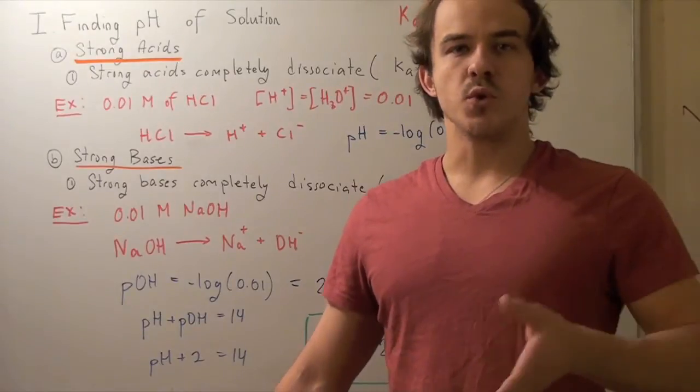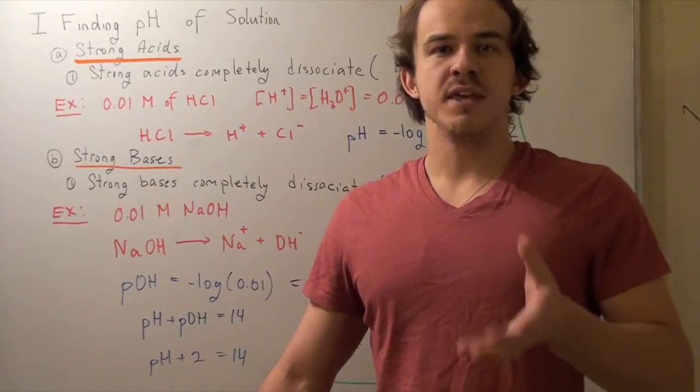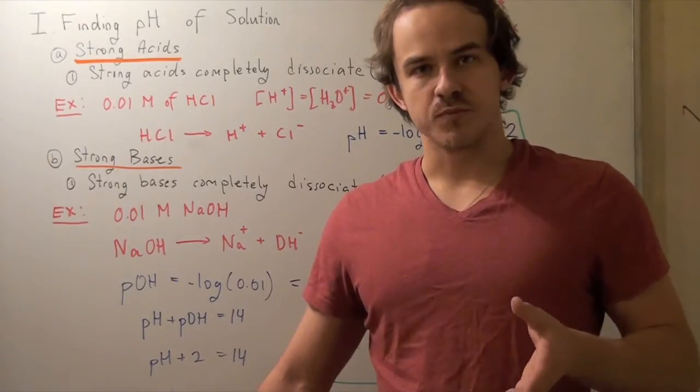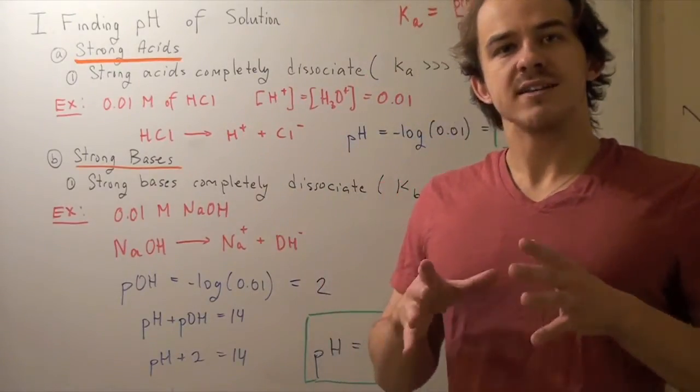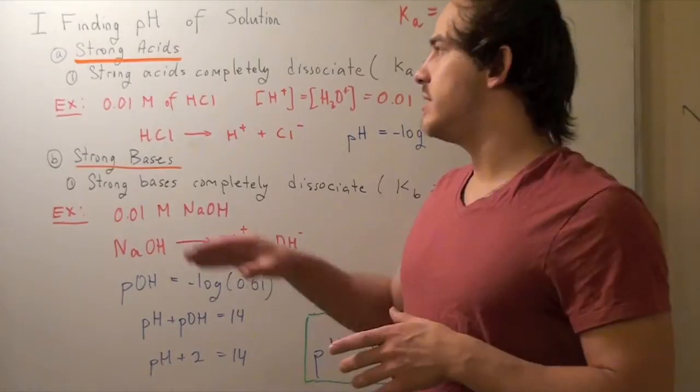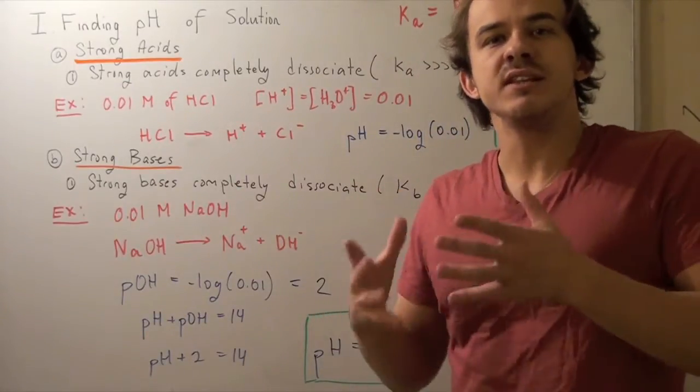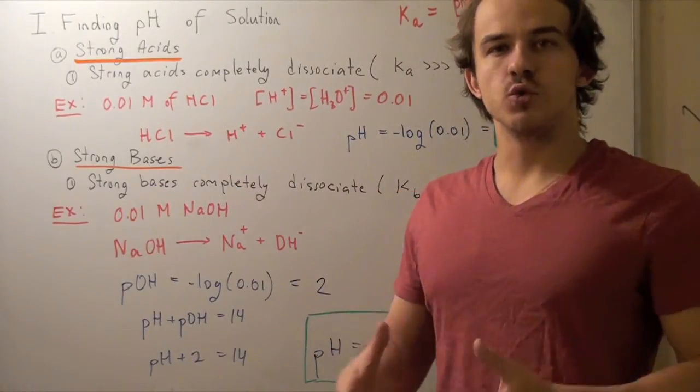In this example, I'm going to show you a quick way of finding the pH under certain conditions. Let's look at strong acids. Whenever we have strong acids in solution, that means strong acids will completely dissociate within that solution.